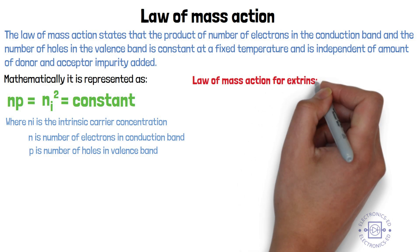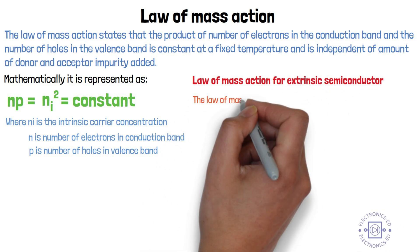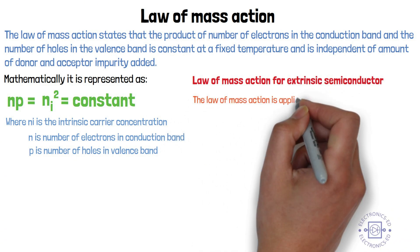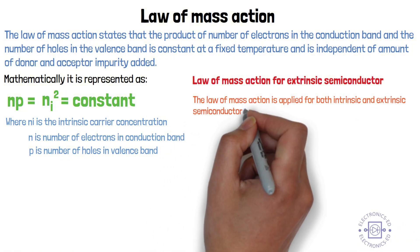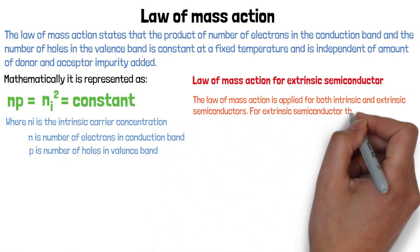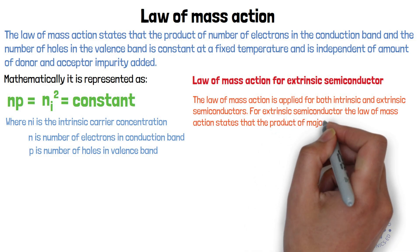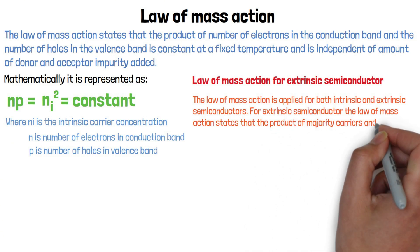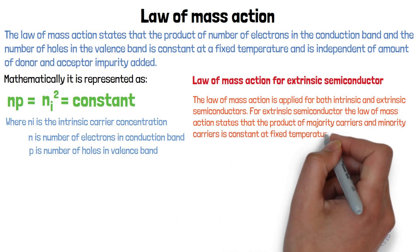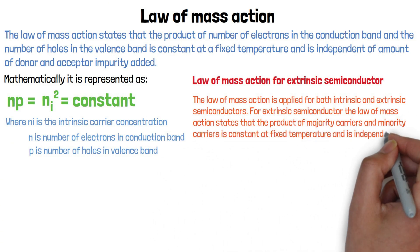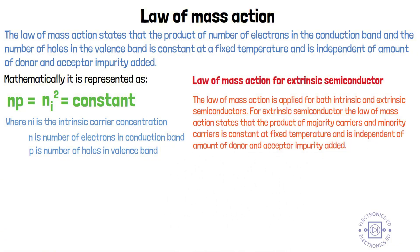Now let's see the law of mass action for extrinsic semiconductors. The law of mass action is applied for both intrinsic and extrinsic semiconductors. For extrinsic semiconductors, it states that the product of majority carriers and minority carriers is constant at fixed temperature and is independent of the amount of donor and acceptor impurity added.